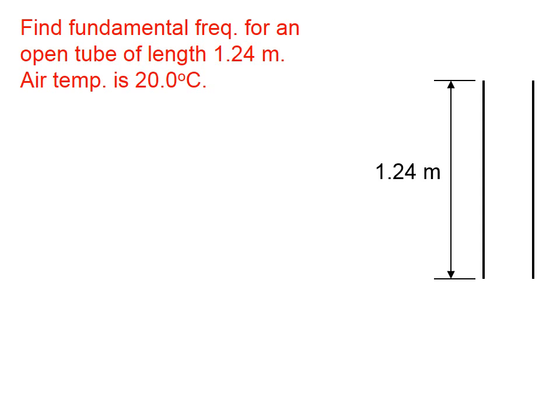On the right, we have our model of an open tube of length 1.24 meters. The equation governing the wavelengths of waves in that tube is λₙ = 2L/n. The fundamental means the first harmonic, that is, n equals 1. So this equation boils down to λ₁ = 2L, which turns out to be 2.48 meters.